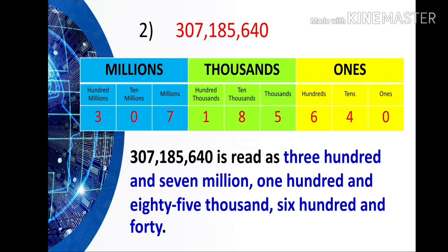For the next example, we have 307,185,640. Use the place value chart as your guide. It is read as three hundred seven million, one hundred eighty-five thousand, six hundred forty.